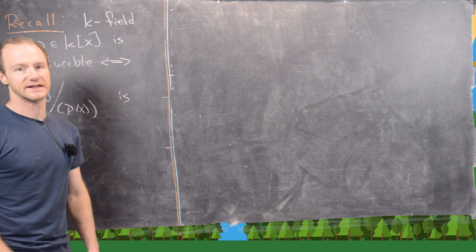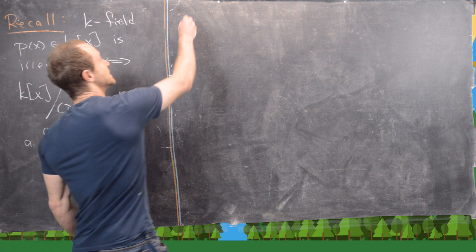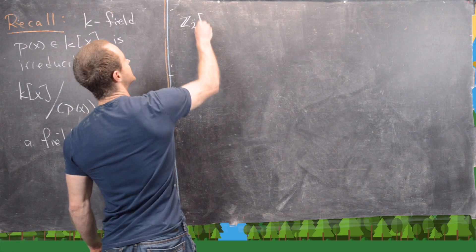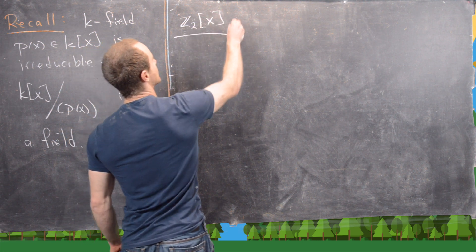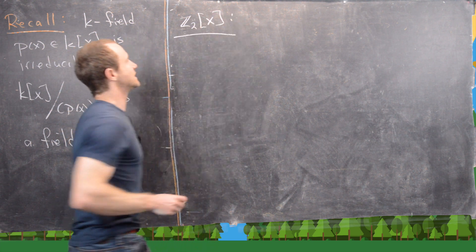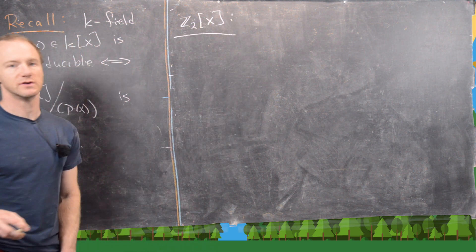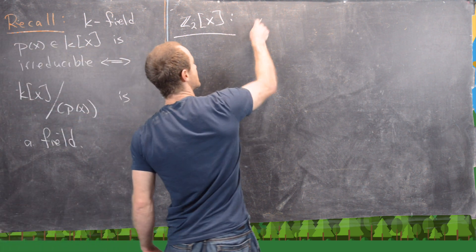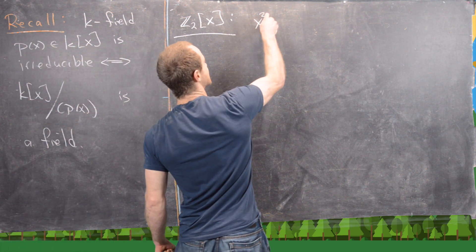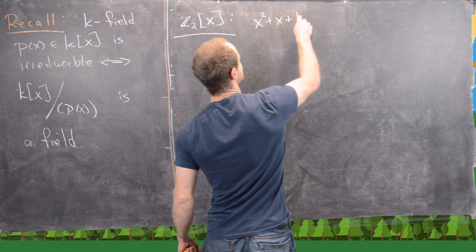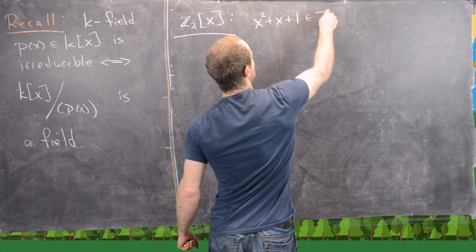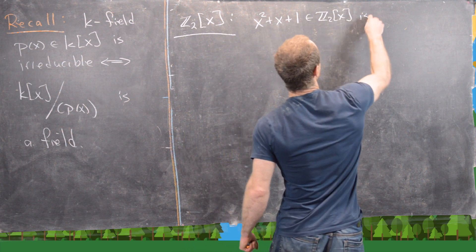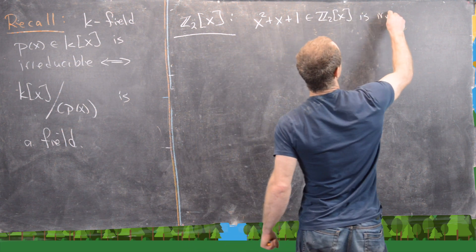We're going to look at an example right now. Let's consider the field Z₂ and the polynomial ring Z₂[x]. We want to notice that x² + x + 1 inside of Z₂[x] is irreducible.